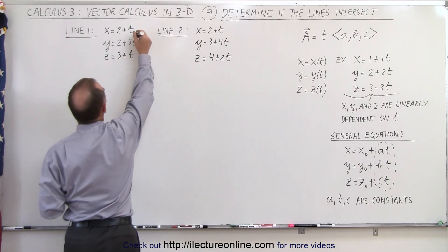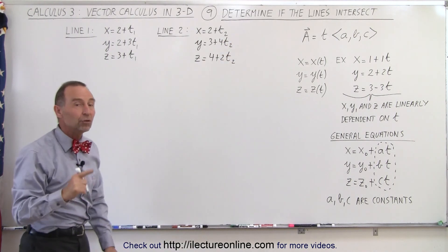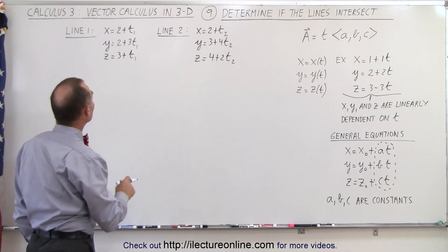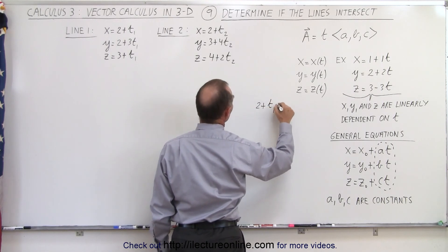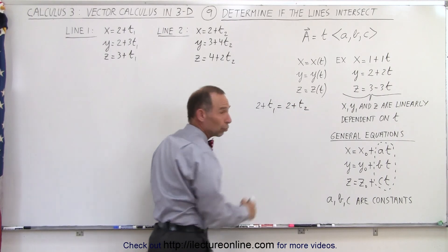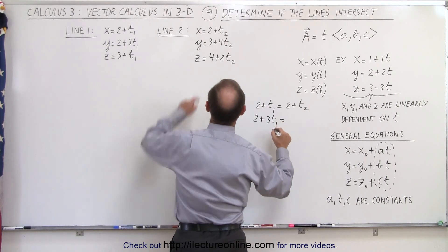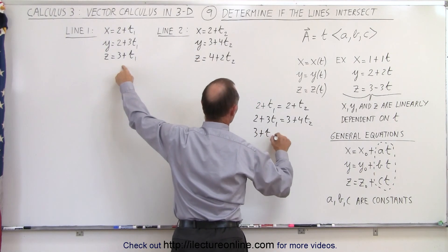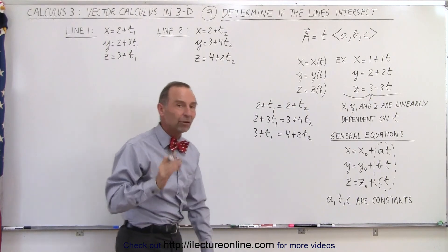So we're going to call this t1 and t2, and find values for t1 and t2 such that x, y, and z for line 1 are equal to x, y, and z for line 2. This requires that 2 plus t1 must equal 2 plus t2, so this alone necessitates that t1 must equal t2. The next condition is that 2 plus 3t1 must equal 3 plus 4t2, and that 3 plus t1 must equal 4 plus 2t2. If all three conditions are correct, then the two lines will cross one another.